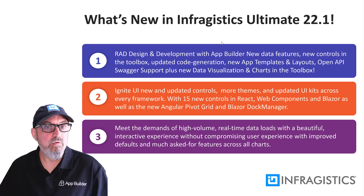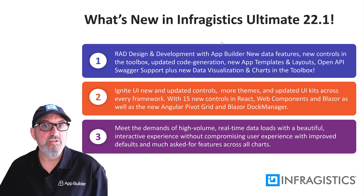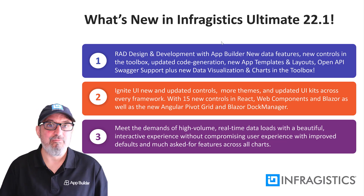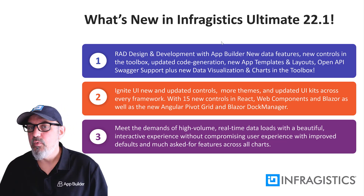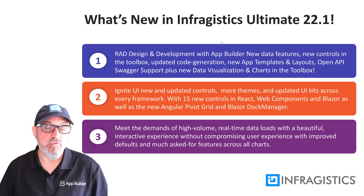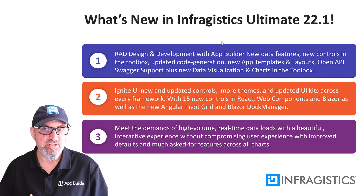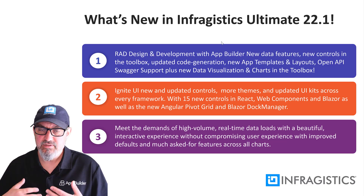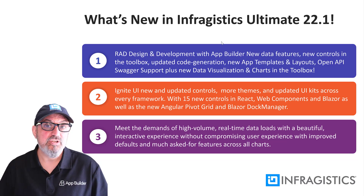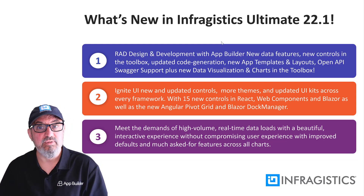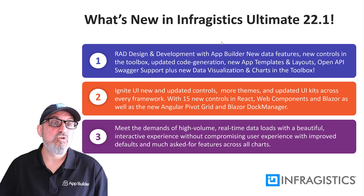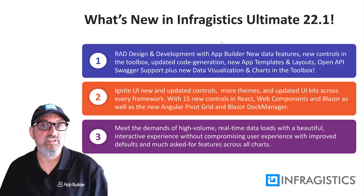First, continued investment in AppBuilder. Our goal is to eliminate more and more code with every release of AppBuilder that you need to write. In 22.1 you can see new layouts, new screen templates. We've updated the data binding support for things like OpenAPI and Swagger so you can connect to any REST API in the cloud or localhost. We have new code generation for Blazor and Angular, and finally you'll be able to see charts in AppBuilder for the first time.